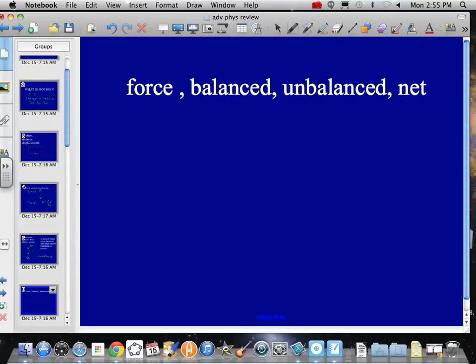So you need unbalanced forces to change motion. Forces can be balanced, unbalanced, or net. Net just means we're going to add them up. That's a sigma. We're going to add up all the forces, i equals one, two, however many. If we add them all up, we could have 100 forces and they could be balanced. They could all just counteract each other.